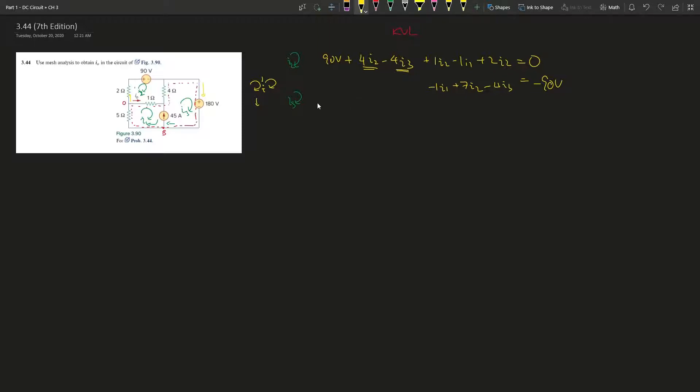Alright, look at the super mesh system starting from top right corner. So 80, 180 volts going to not be, and then we're going to 5 times I1 plus 1 plus I1 minus 1 times I2 plus 4 times I3 and then minus 4 times I2. And this whole thing gives us 0.